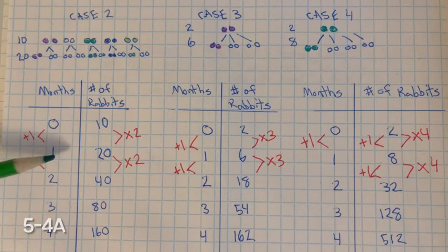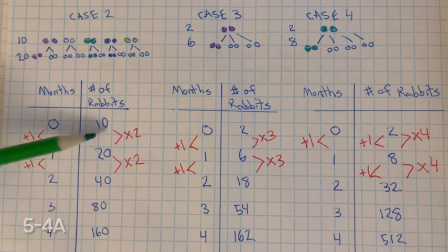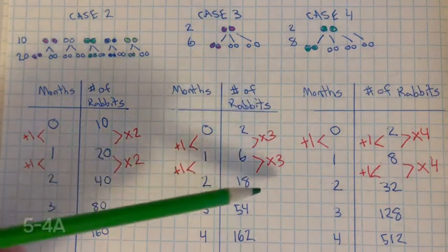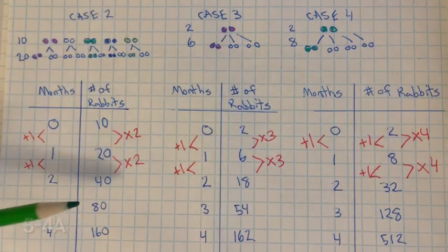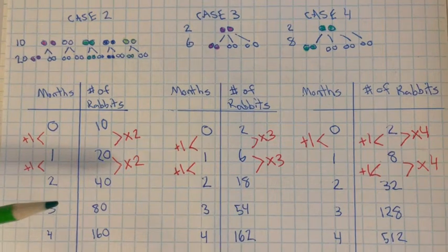Previously, in linear functions, this would be adding 2, adding 3, and it would create a linear function, a line when you graph it.